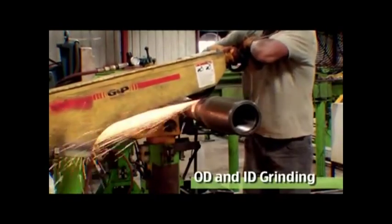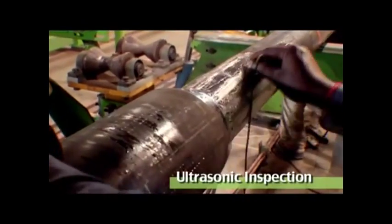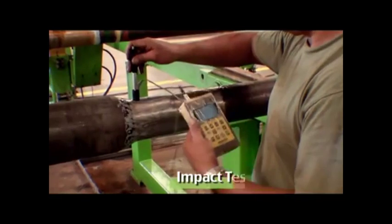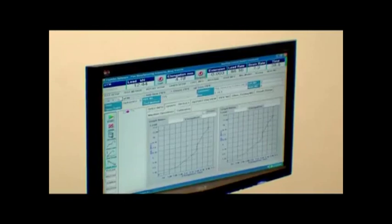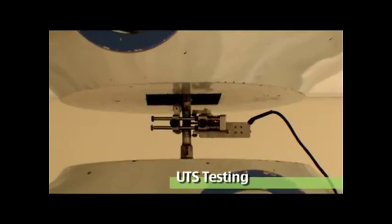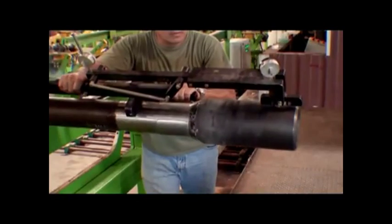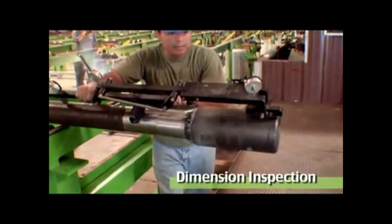Magnetic particle inspection and ultrasonic testing is carried out on the finished drill pipe. The pipes are further subjected to mechanical testing as per specification. Subsequently, the finished drill pipes are inspected for dimensional accuracy.